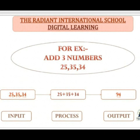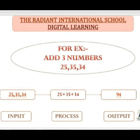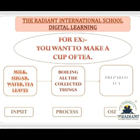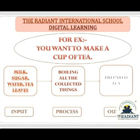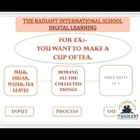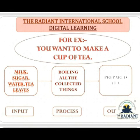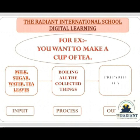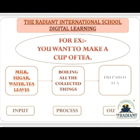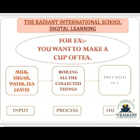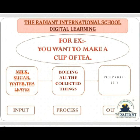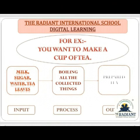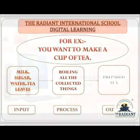Next example: you want to make a cup of tea. Do you like tea? So let's make it. First we will take milk, sugar, water, and tea leaves — we will add them. So what did we do? That was our input. After that, we will boil all the collected things. After boiling, the nice tea that we get — that is our output. Similarly, the exam we give is input, then it gets processed, then our result comes — that is output.